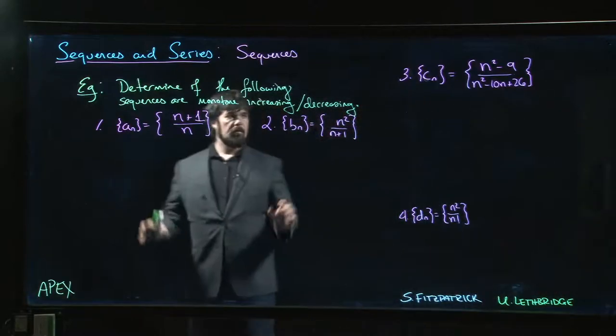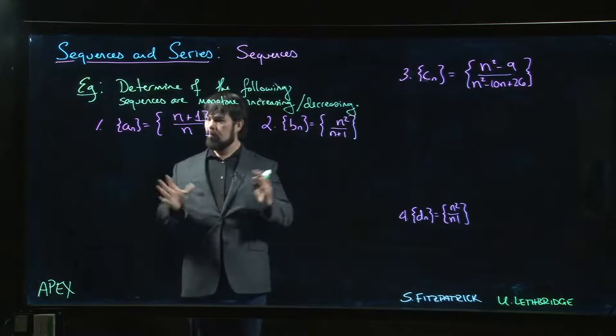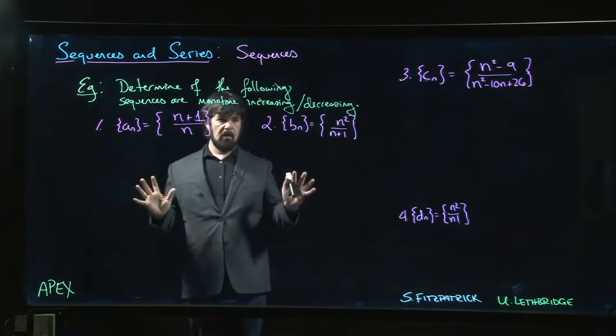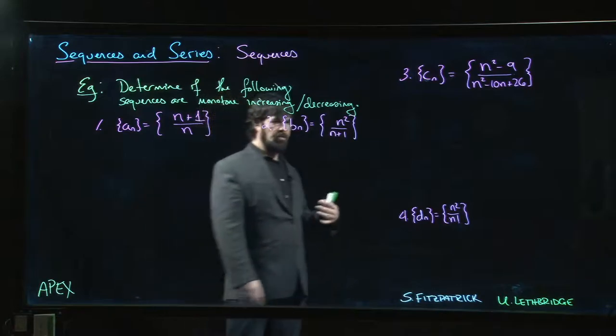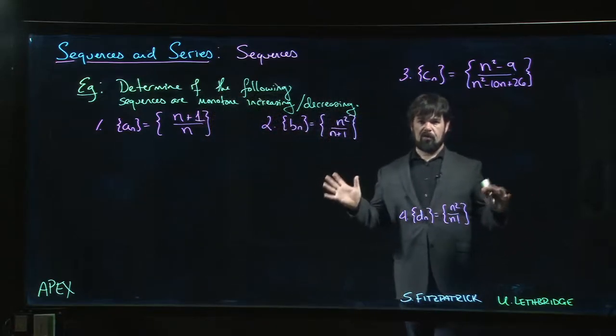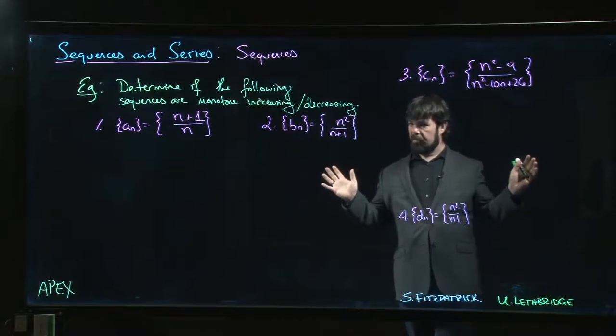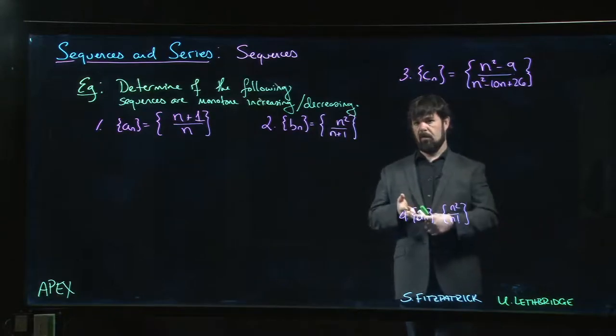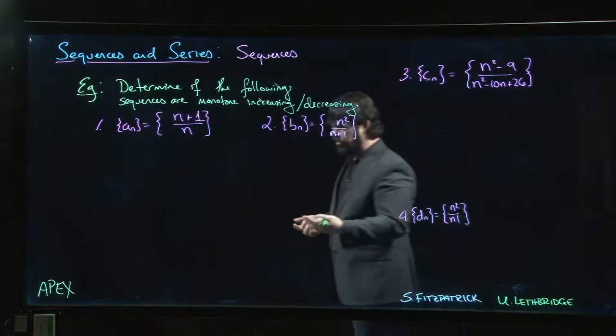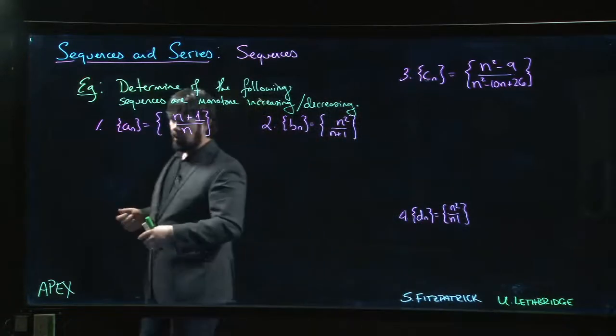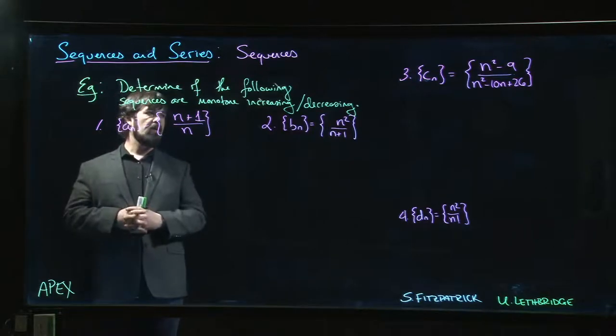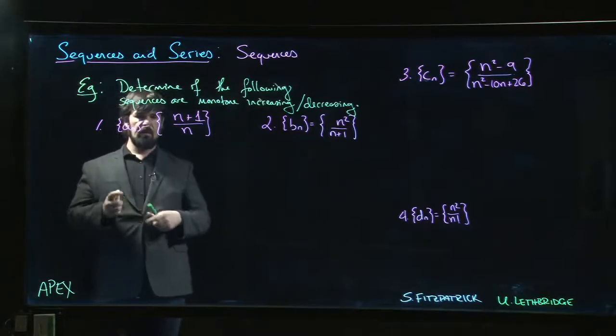All right, so here are four sequences. We want to decide if these are monotone increasing or monotone decreasing, because we're interested in whether we can apply this theorem we've just discussed. We have a theorem that says every bounded monotone sequence converges, and so if we can identify when a sequence is bounded and monotone, well then we have a very powerful tool for determining convergence of a sequence.